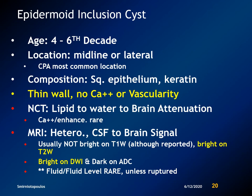The first we'll discuss is the epidermoid inclusion cyst. These typically present in the fourth through the sixth decades. They are usually in a lateral location, although they can be midline. They have squamous epithelium and contain keratin debris. They have a very thin wall with no visible calcification or vascularity in most cases. They can have attenuation and signal intensity very similar to water. However, because of restricted diffusion, they will be bright on diffusion-weighted imaging and dark on the ADC maps. Fluid levels are very rare.